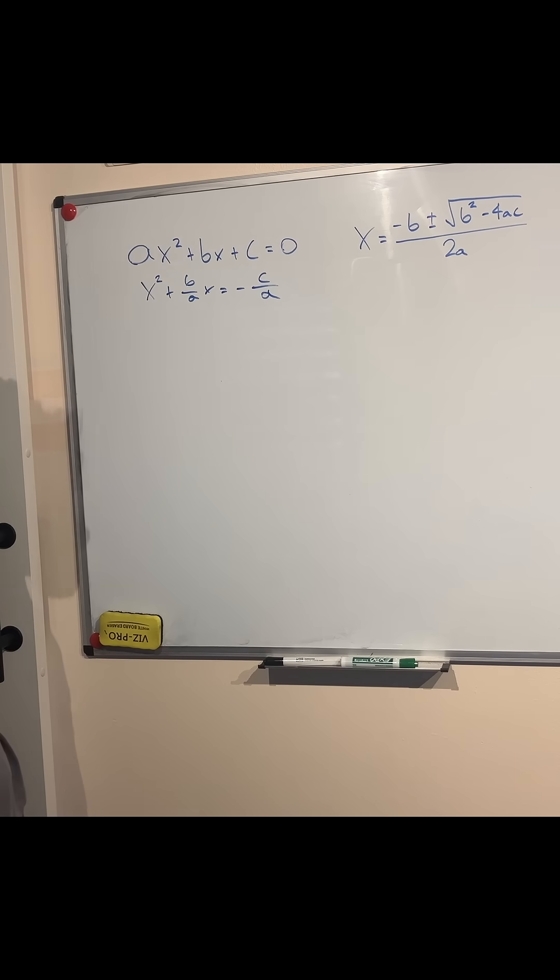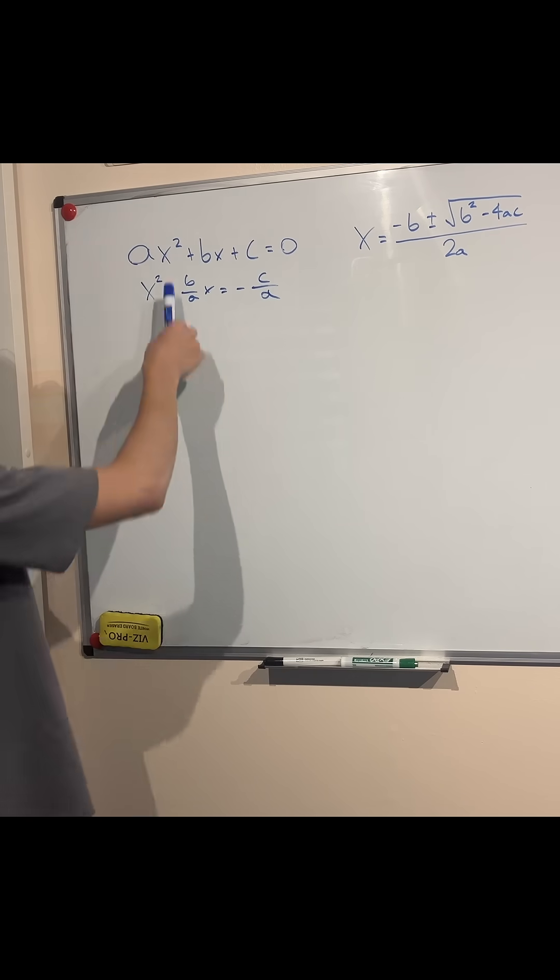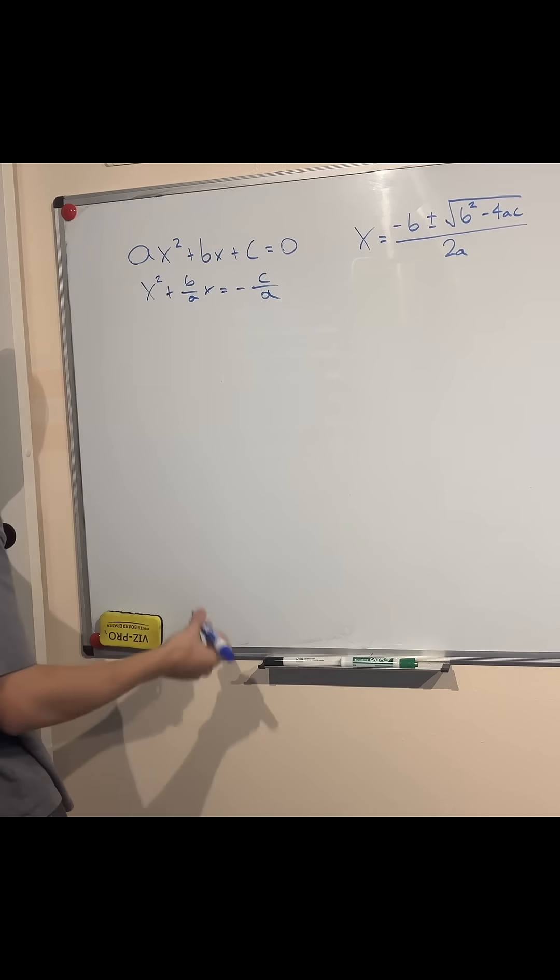Notice adding what expression will make the left hand side a perfect square binomial. Well, look at this, we divide b/a by 2 and then square it. So we get (b/2a)² as our term.